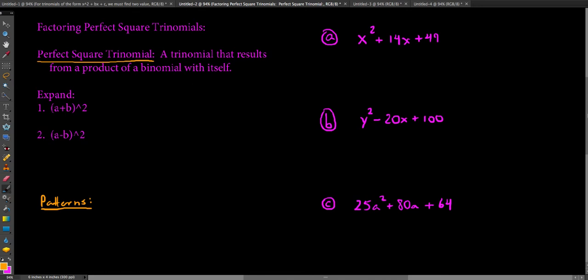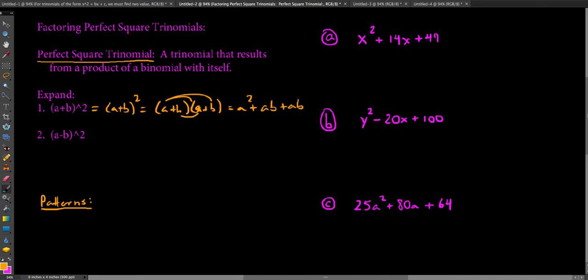Let's look at what it would look like if we squared a binomial. Consider a plus b squared — that really is a plus b times a plus b — and see what patterns emerge. If we FOIL this, we get a squared plus ab plus ab plus b squared, which simplifies to a squared plus 2ab plus b squared. This is a perfect square trinomial.